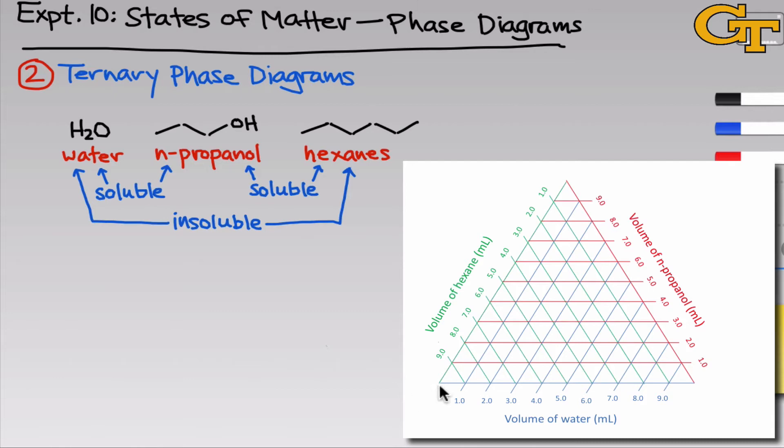The side on the upper left represents the volume of hexane running from zero milliliters at the very top of the triangle to ten milliliters in the bottom left. And what we can see now is that the green tie lines cross this side and tell us the volume of hexane in each mixture. So for example, the five milliliter tie line sticks out here and tells us that all of the mixtures along this tie line contain five milliliters of hexane within them.